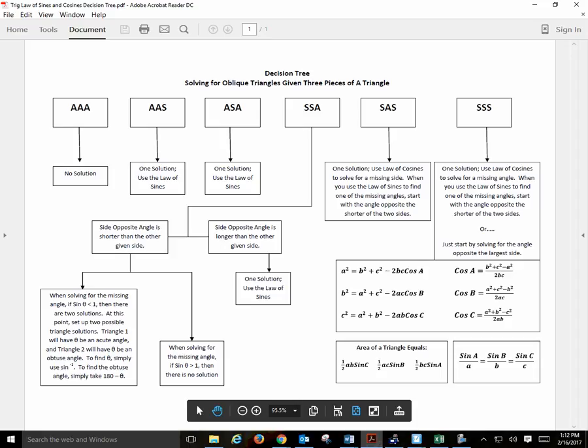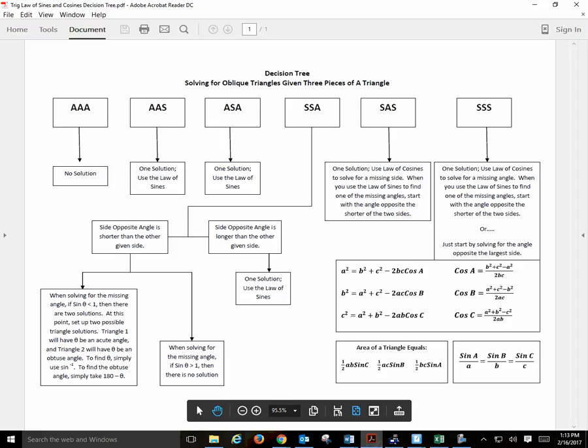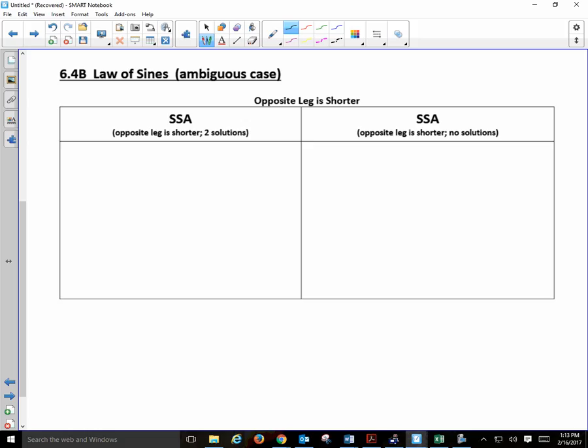And so we look at this scenario with the ambiguous case of side-side angle, otherwise known as donkey, right? Yesterday we said angle-angle-angle, no solution. Angle-angle-side, or angle-side-angle, one solution. No big deal. And then we looked at this case where you have the side opposite the angle is longer than the other given side. That was your worksheet, correct? And there was just one solution. So everything on the left side of your worksheet was one of the first two scenarios with angle-angle-side or angle-side-angle. And then on the right side of the worksheet, it was side-side-angle, but the opposite angle was always longer than the other given side.